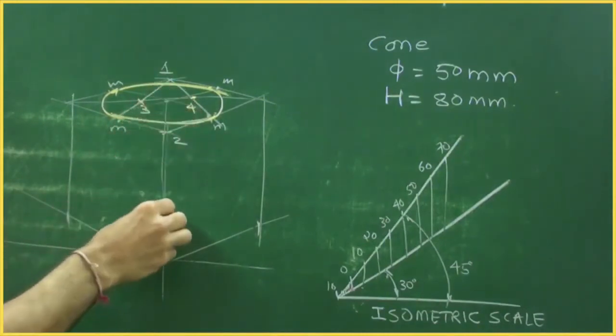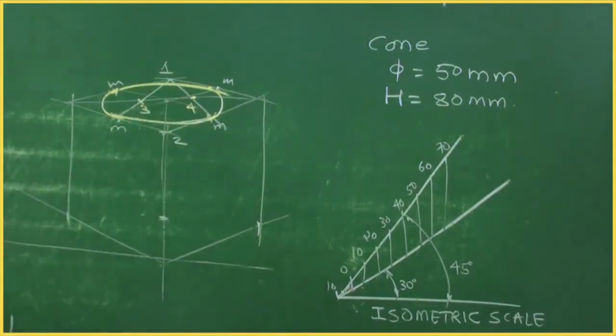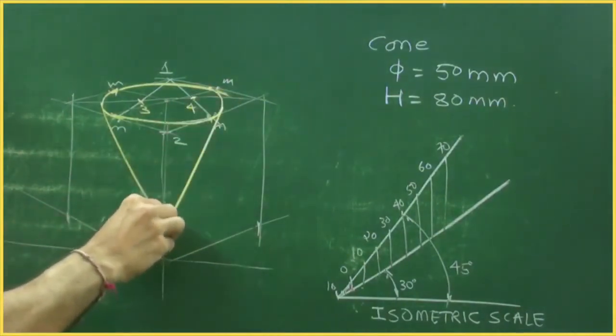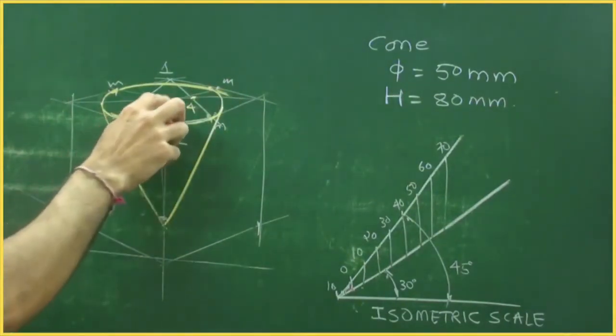You go down by how much? Height 80. And you draw tangent. We can draw axis also.